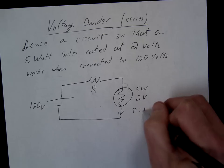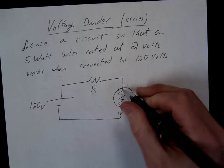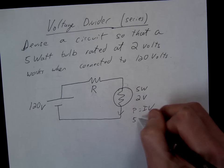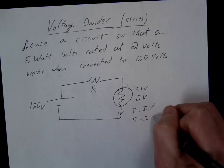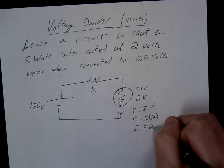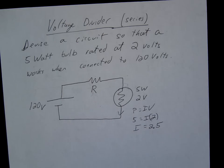Okay, P equals I times V. So let's find the current through this resistor. We'll use P equals I times V. So it's going to be 5 equals I times 2. So I looks like it's going to be 2.5 amps.